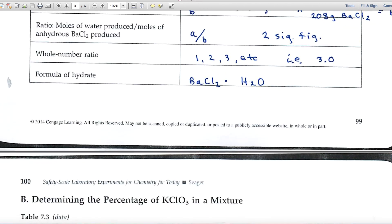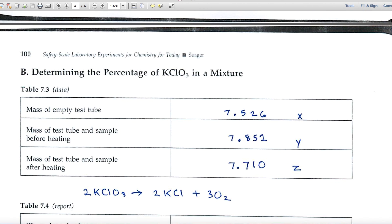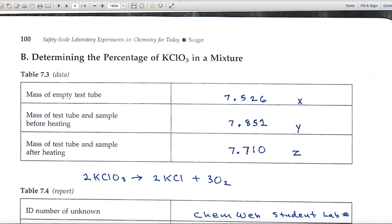In part B, we're decomposing potassium chlorate. I've written the formula here for the decomposition. One starting material, two products. KClO3 is a solid, but oxygen is a gas. It's going to be given off. So we'll have a starting weight or mass of this starting material, and then a final mass which will be less because all of the oxygen has been driven off.